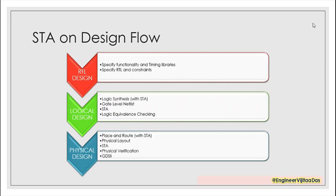Next we need to see how STA works in the design flow. If we divide the VLSI design flow, there are three main sections: first is RTL design, next is logical design, and the last is physical design — front end, middle end, and back end respectively. For RTL design, we specify the circuit functionality, timing libraries, the RTL written in HDL language, and the design constraints. Once RTL design is done, we move to logical design.